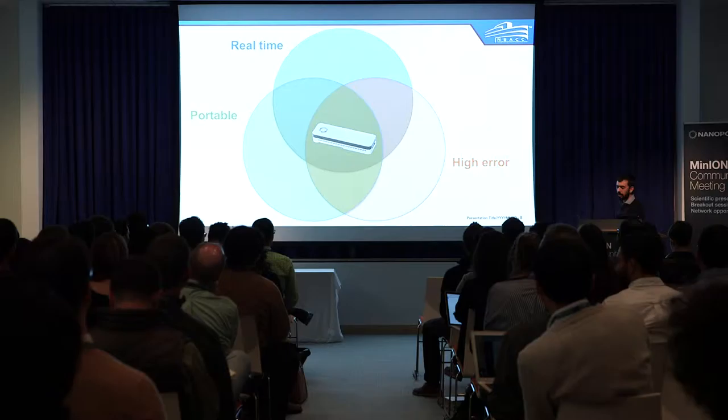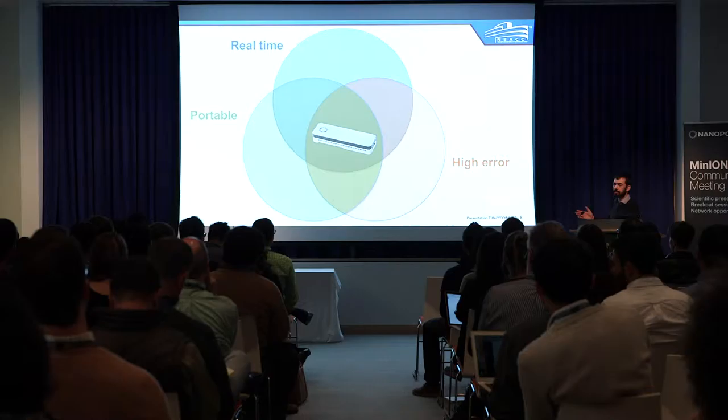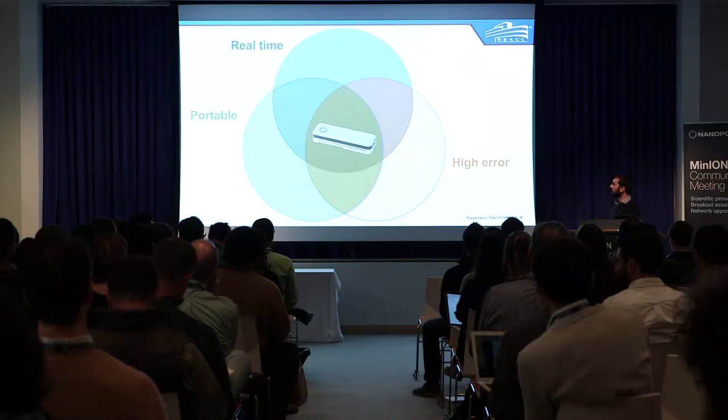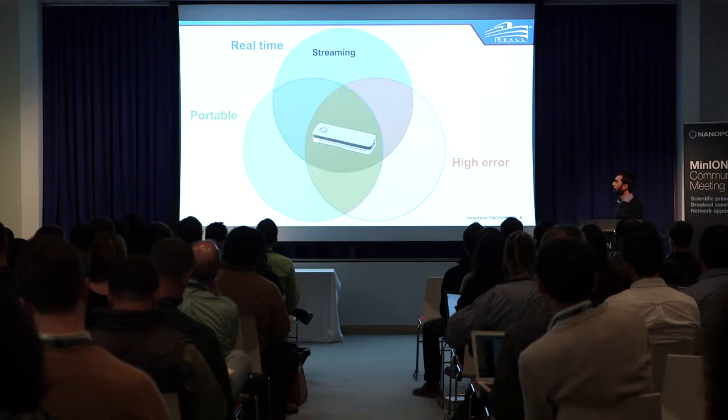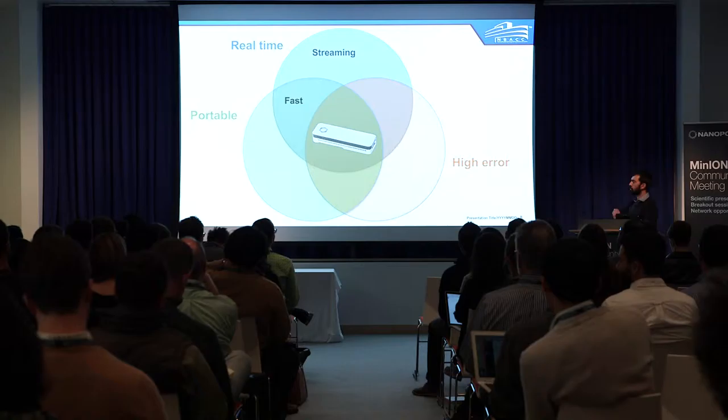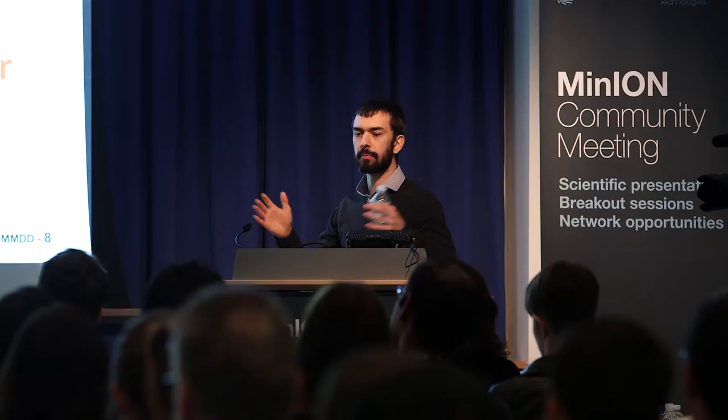If you want to analyze the data, you have to use algorithms that play to the strengths of this device and can accommodate the weaknesses if you really want to take full advantage of it. For example, it's a real time sequencer so your algorithm has to accommodate streaming data — you don't want to wait until everything is collected and then do something like assemble. Also has to be fast, which helps with streaming but also helps with portability, because having this tiny little sequencer doesn't do you much good if you need a big room full of compute cluster to analyze the data.